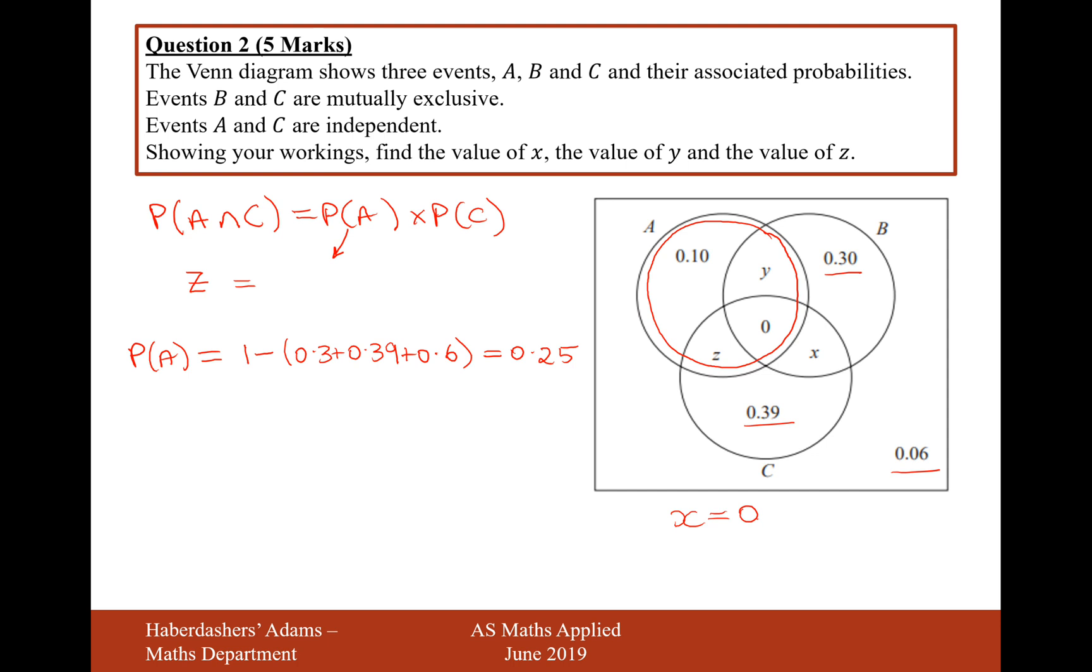So coming back to this part of the question here, 0.25 will be the probability for A. And then we're going to multiply that by the probability of C, which is going to be everything inside the C circle. So X, we know that's 0. So this is just going to be, there's not much we can do here. We can't use the same strategy as before because then that would leave us with a Y in this question. So it's just going to be 0.39 add Z. That's the probability of C.